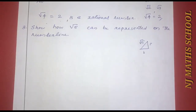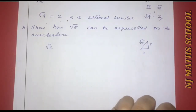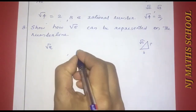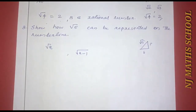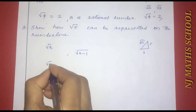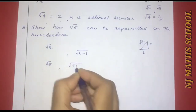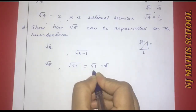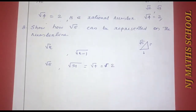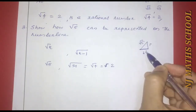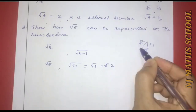To locate √n on the number line, we use √(n-1) already located. Here we need √5, so we use √4 = 2 as the base. We take base = 2 units and perpendicular = 1 unit. By the Pythagorean theorem, the hypotenuse will be √5.